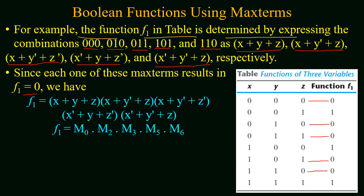We combine all these max terms using the AND or product operation. So f1 will be equal to the product of all these max terms, or replacing them with their corresponding designations, f1 will be equal to the product of M0, M2, M3, M5, and M6.